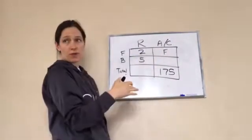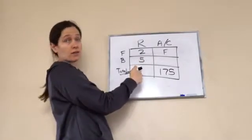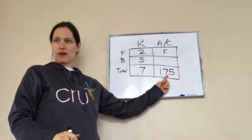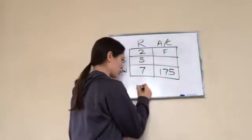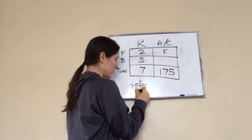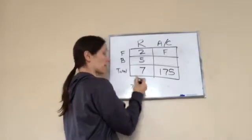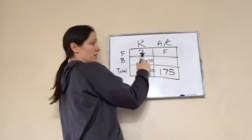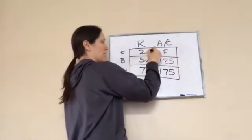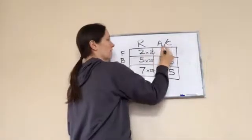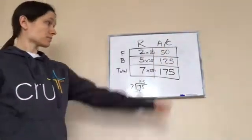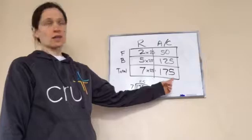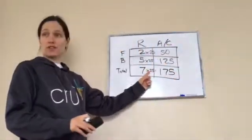Can I determine the ratio total? Yes — five plus two is seven. Now can I find something times seven that equals 175? Let's try: seven times 25 is 175. So our function is 25. Two times 25 is 50, and five times 25 is 125. So there were 50 football players on the field. Check: 125 plus 50 equals 175 — correct.